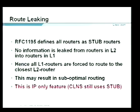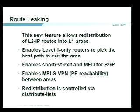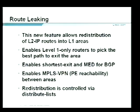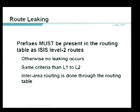Route leaking is an IP-only feature, not CLNS — you are only leaking IP prefixes. This new feature allows redistribution of L2 IP prefixes into L1, enabling level-one-only routers to pick the best path to exit the area. For MPLS VPNs using loopback addresses for peer reachability, you can leak loopbacks into the local POP so routers pick the best exit point. Caveat: prefixes must be present in both the L2 database and the routing table, otherwise no leaking occurs.